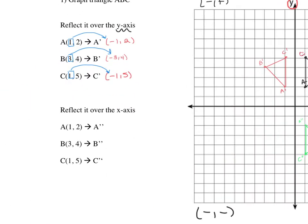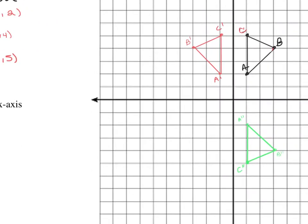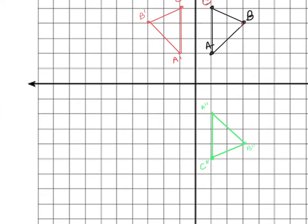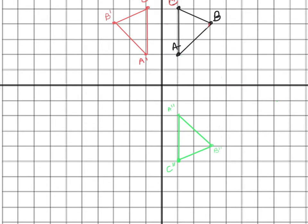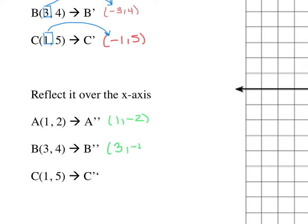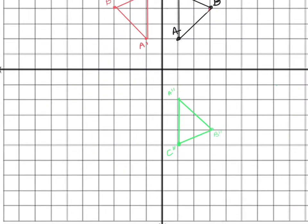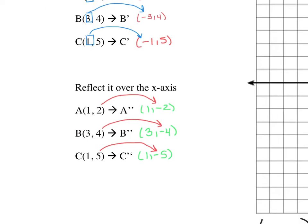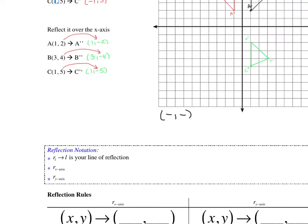Now we're going to label those points. A double prime was (1, −2), B double prime was (3, −4), and C double prime was (1, −5). What do you notice? When you reflect over the x-axis, the only thing that's changing is your y-value. You keep x the same and make your y-value opposite. So a 5 becomes a −5, a 4 becomes a −4, and a 2 becomes a −2.